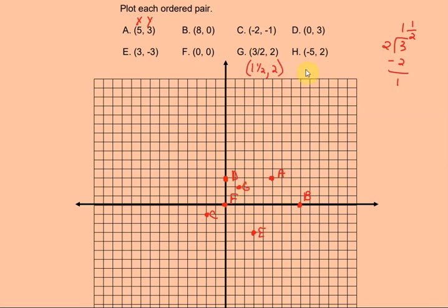Point H is at negative 5, 2. Starting at the origin, I go negative 5 — meaning to the left — 1, 2, 3, 4, 5 spaces, and then a positive 2, so I go up 1, 2 spaces. Right there is where my point is, and that's point H.